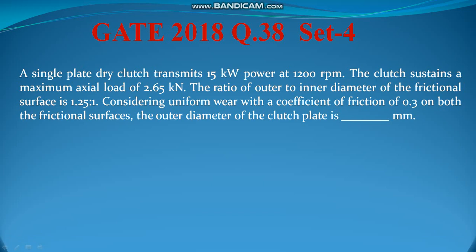Hello students. The next problem is from GATE 2018, question number 38 from set number 4. This problem is about the single plate clutch from the power transmission section — two marks for this question. A single plate dry clutch transmits 15 kW power at 1200 RPM. The clutch sustains a maximum axial load of 2.65 kN.